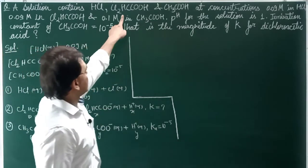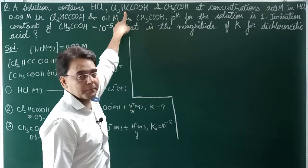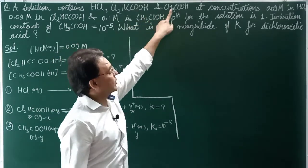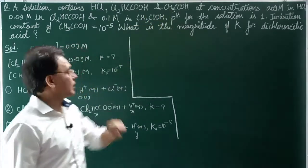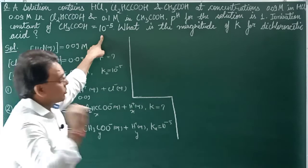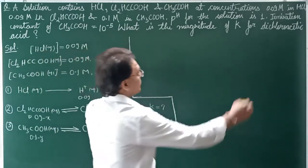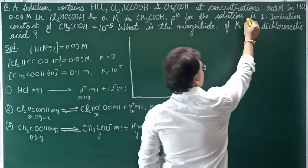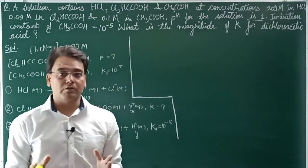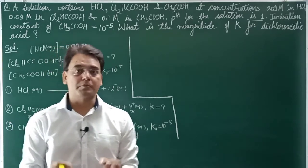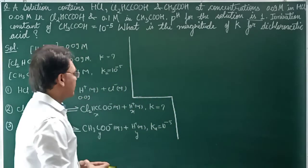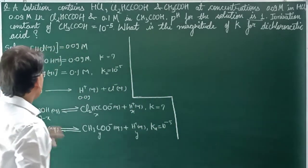Dichloroacetic Acid's ionization constant is K. The ionization constant of CH₃COOH is 10 to the power minus 5. Since pH of this solution is 1, the concentration of H⁺ ions is 0.1 M.